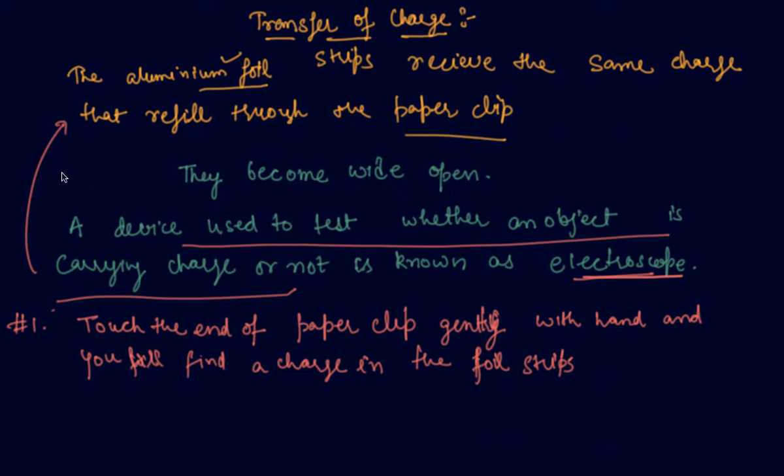Now when they come in contact of each other they come back to their original state. Now repeat the charging of foil strips and touching that paper clip. Do this four to five times. Every time you will find that the foil strips collapse as soon as you touch the paper clip with hand.